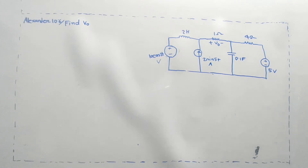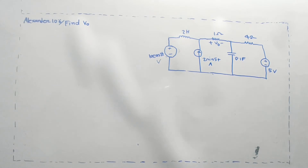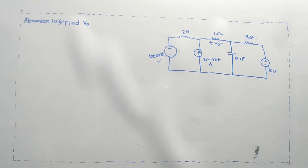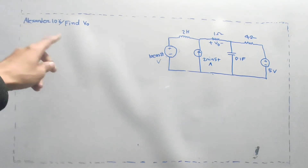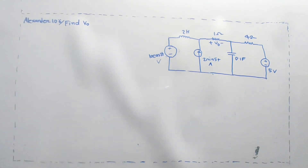If you look at our playlist, you will see this basic video. If you look at the DC circuit section, you will see the idea of DC circuit analysis and the same type of problem. In Alexander problem 10.6, you will find V0.